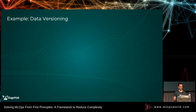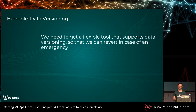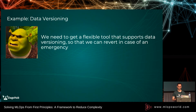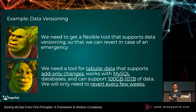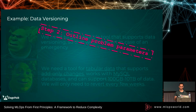Now that we've defined our problem, you might be tempted to say 'we need a flexible tool that supports data versioning so we can revert in case of an emergency.' But that will again make you significantly more likely to get into analysis paralysis. What you actually want to say is: we need a tool for tabular data that supports add-only changes, works with MySQL databases, can support 100 gigabytes to 10 terabytes of data, and we'll only need to revert every few weeks. The next step of the process is outlining problem parameters — diving into the details and laying out the criteria and requirements we're looking for in a solution.